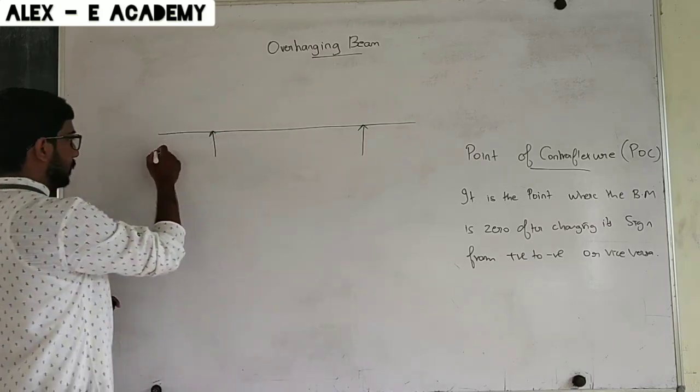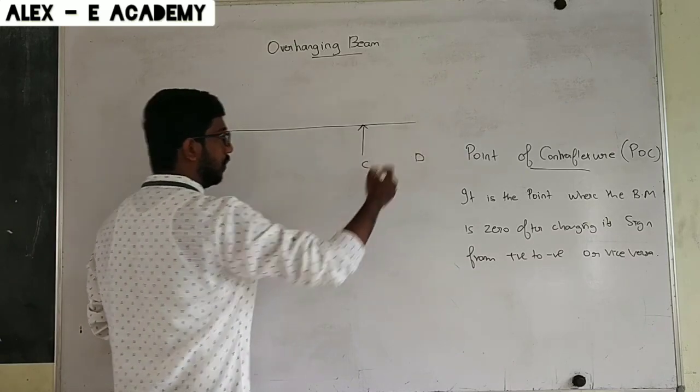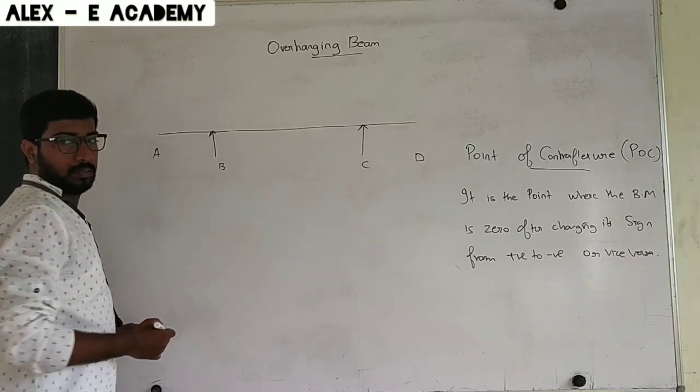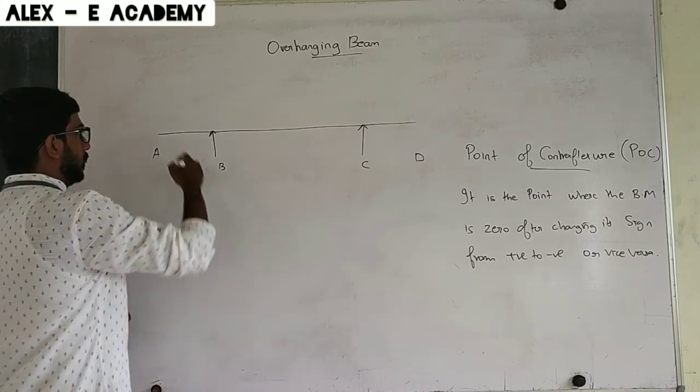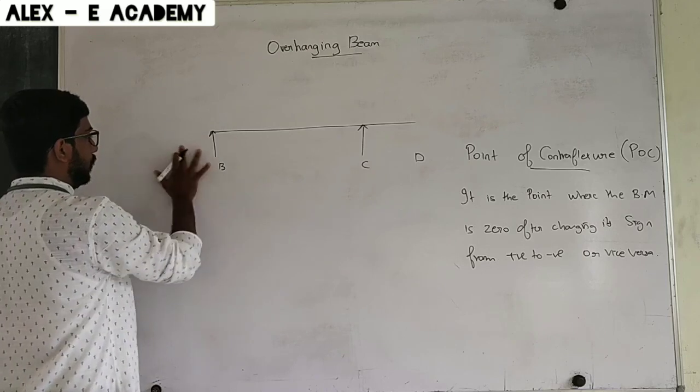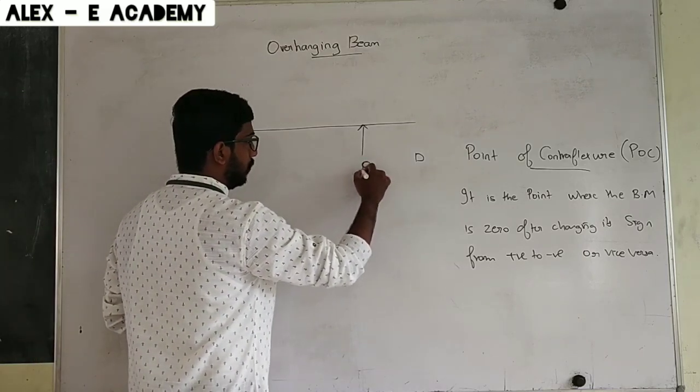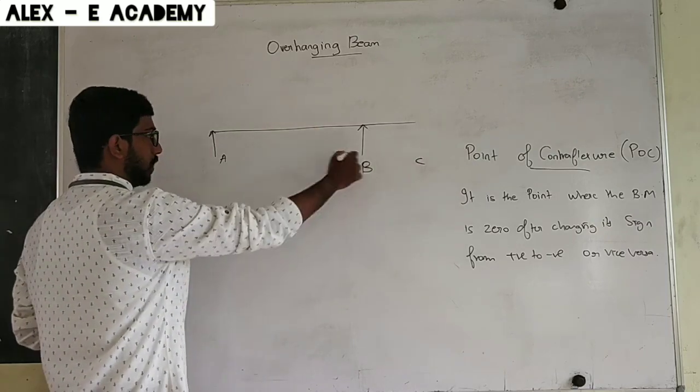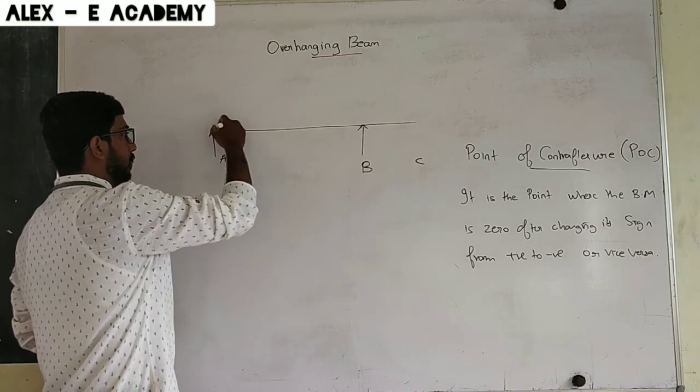For example, consider points A, B, C, D for an overhanging beam. In the overhanging section, either A-B or B-C is the overhanging portion.